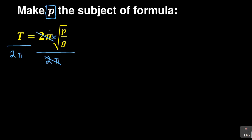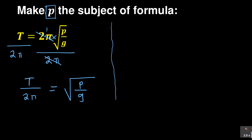When you've done that and two pi is gone, what you have is t over two pi equals the square root of p over g. That is how you get rid of that two pi. Now the next thing you need to do is to understand what that square root sign means. When you see a square root sign, it means there is a bracket.